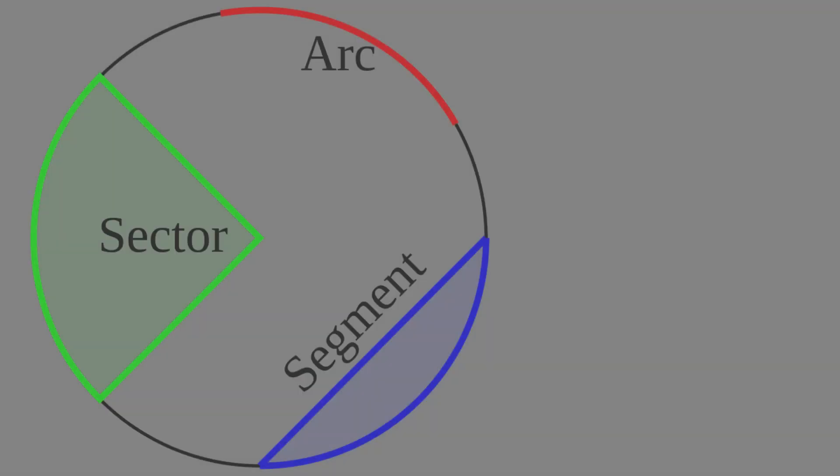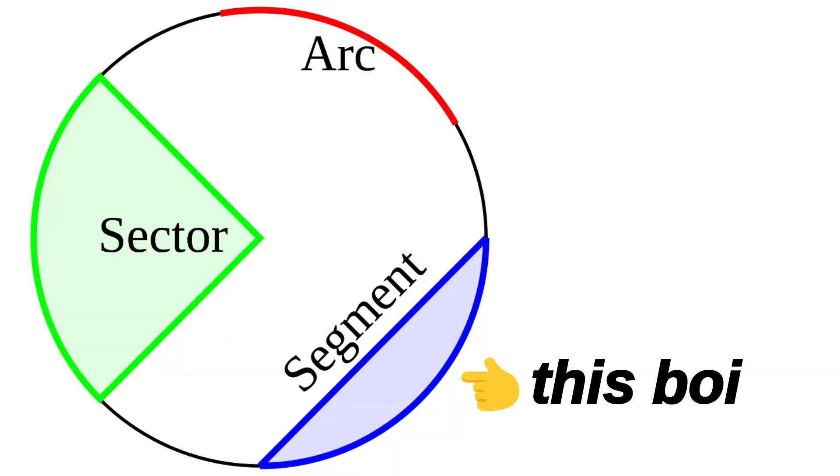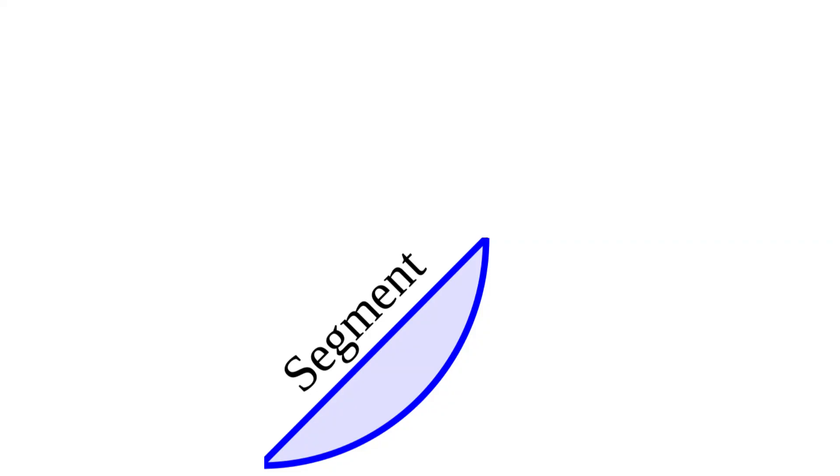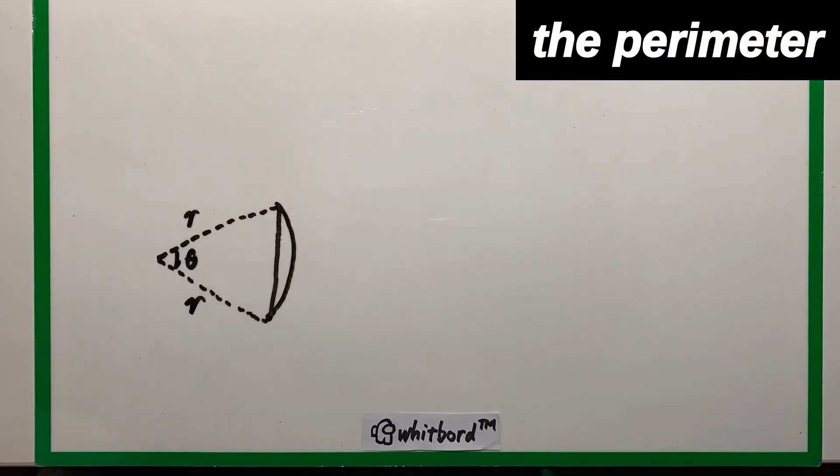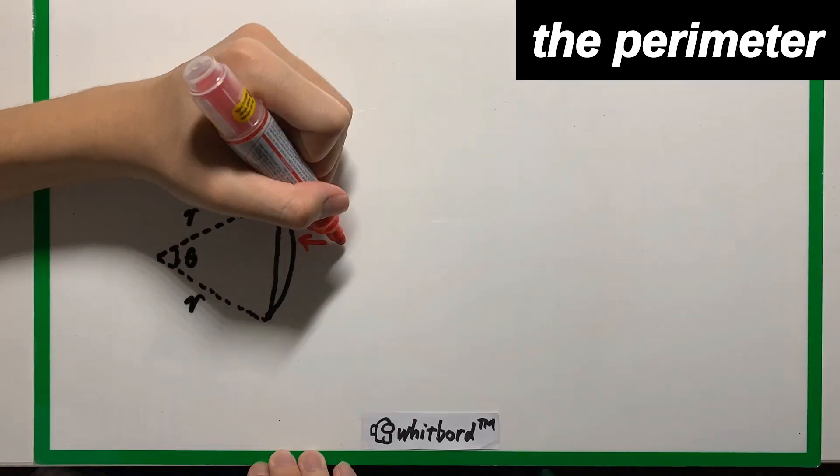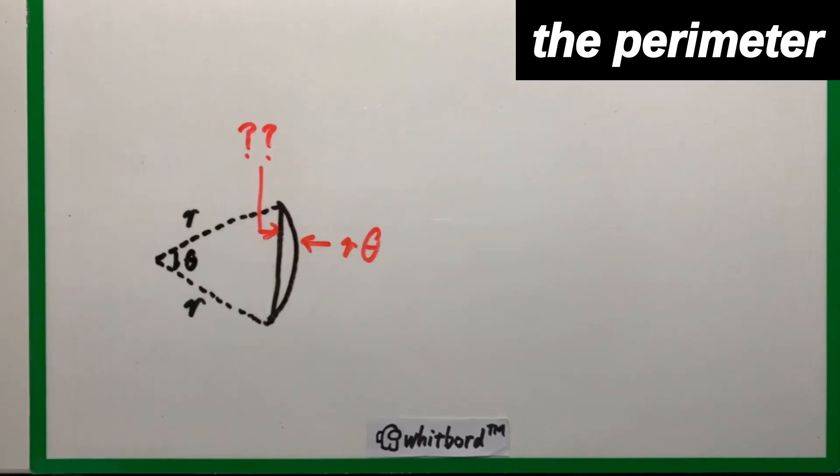Some of you may have noticed that I missed out talking about the segment. But I left it here in this small segment. Because it's really straightforward, honestly. We know how to find the arc length, so we're just left with finding the length of this segment.